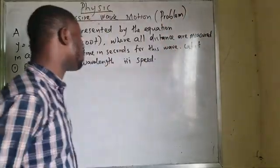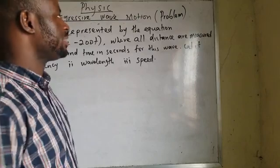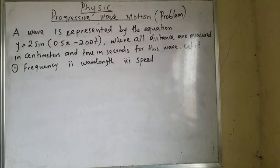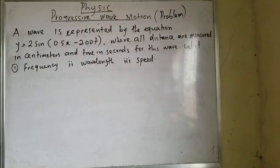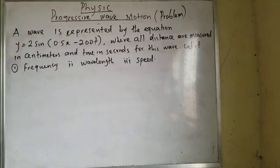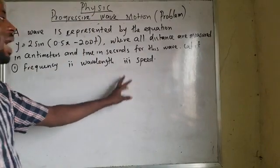Try to comment for motivation purposes. On this video it will be a continuation of progressive wave. I want to show you one equation. There is a question sent to me that I want you to see the way it will be solved. A wave is represented by the equation y equals to 2 sin(0.5x minus 200t), where all distances are measured in centimeters and time in seconds. For this wave, calculate its frequency, wavelength and speed.